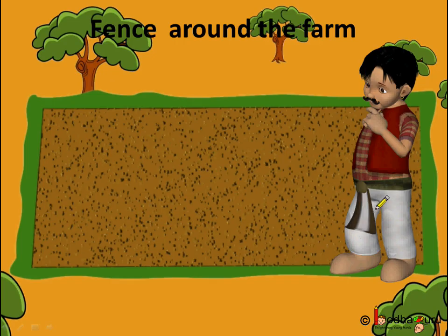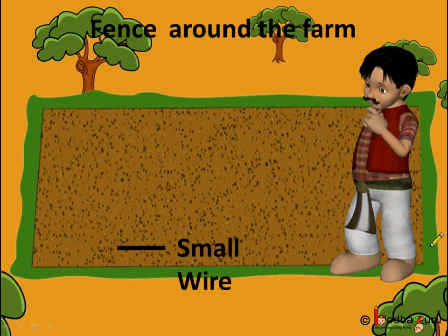This is Mehnat Ram. He bought a piece of land and he wanted to fence this land in order to prevent the stray animals entering the field and destroying his field. So what should he do? He has many small pieces of wire. So he wanted to use them to fence his field.